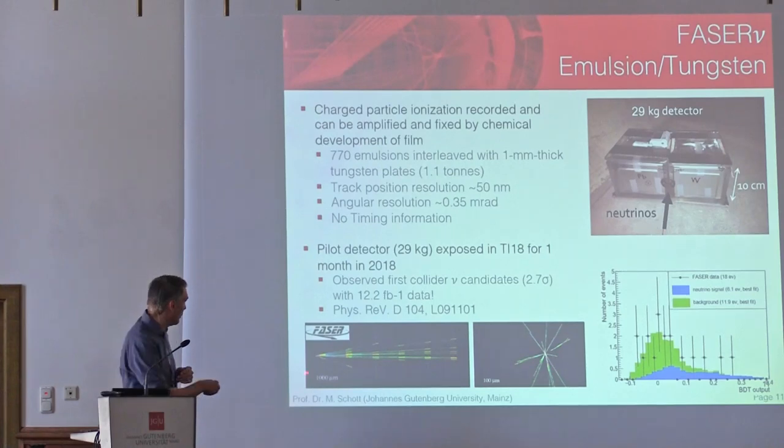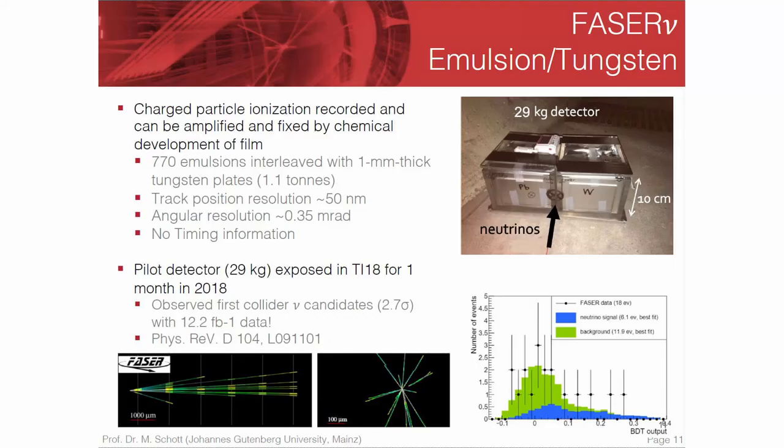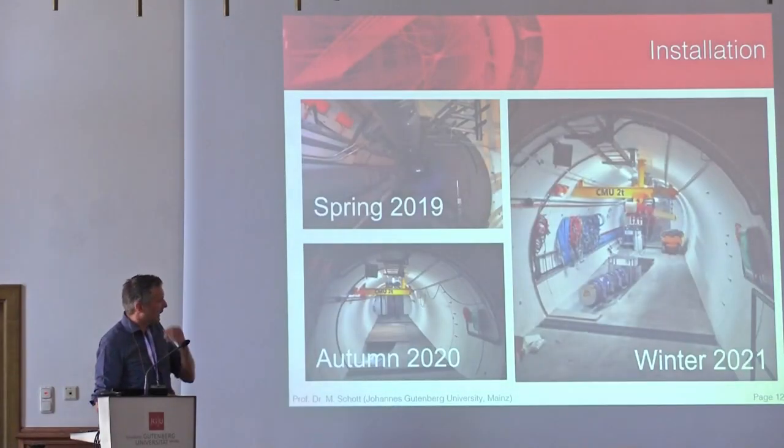What you see here is the result of a pilot detector, only 30 kilograms, which we ran in 2018. This already led to our first publication where we observed — unfortunately not with 5 sigma, but with 2.5 to 2.7 sigma — a first neutrino candidate event coming from a collider.